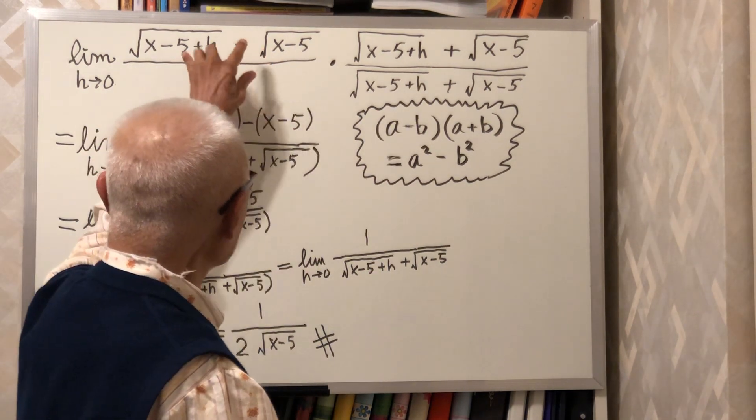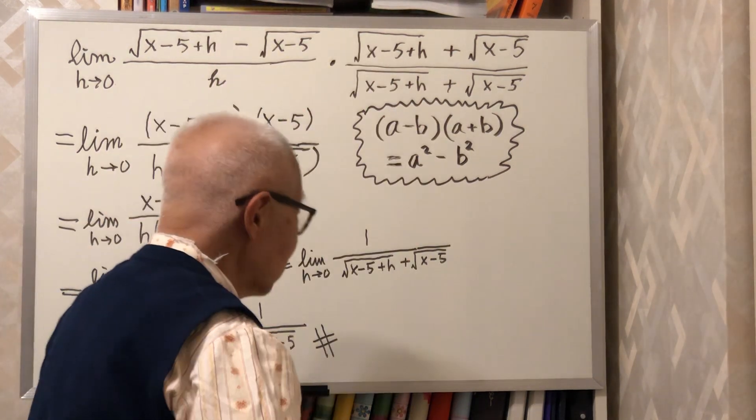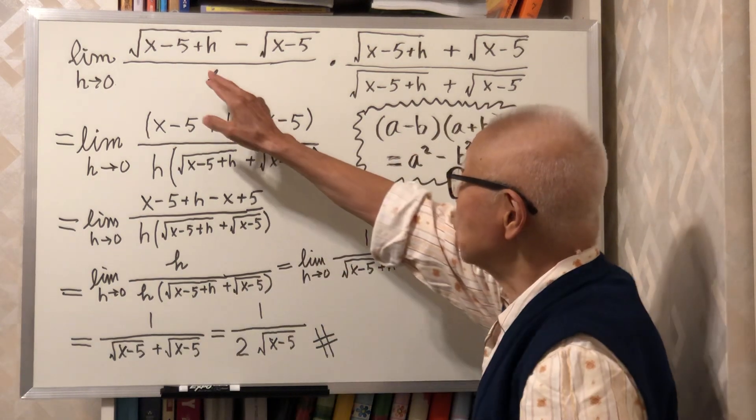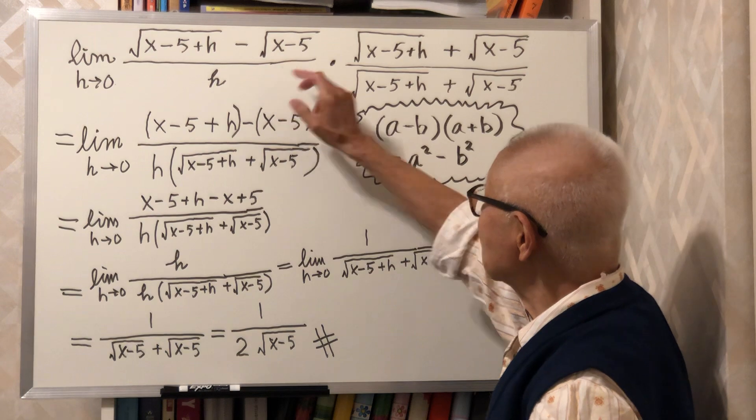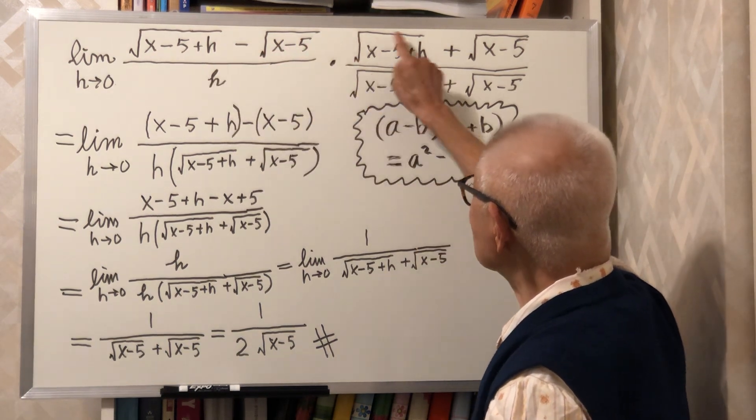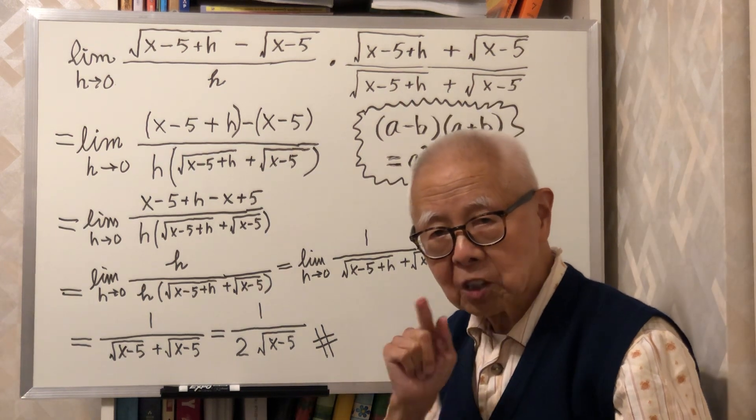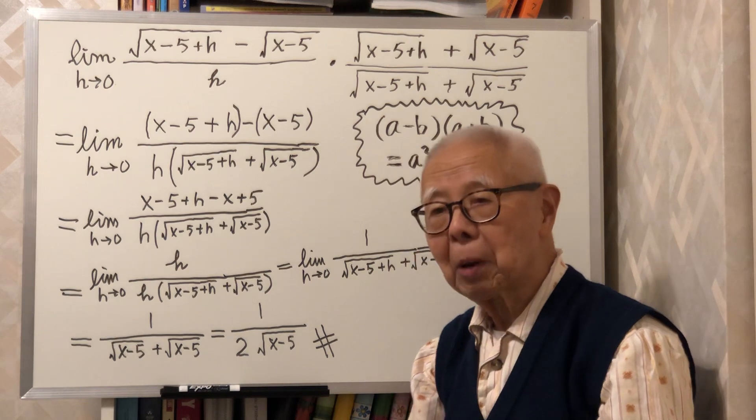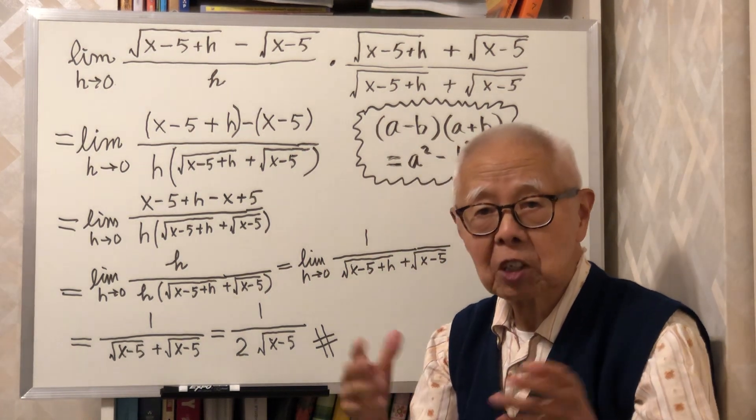We multiply the two numerators and you will notice this is (a - b) multiplied by (a + b). What is (a - b) in brackets multiply another bracket (a + b)? What is the result?